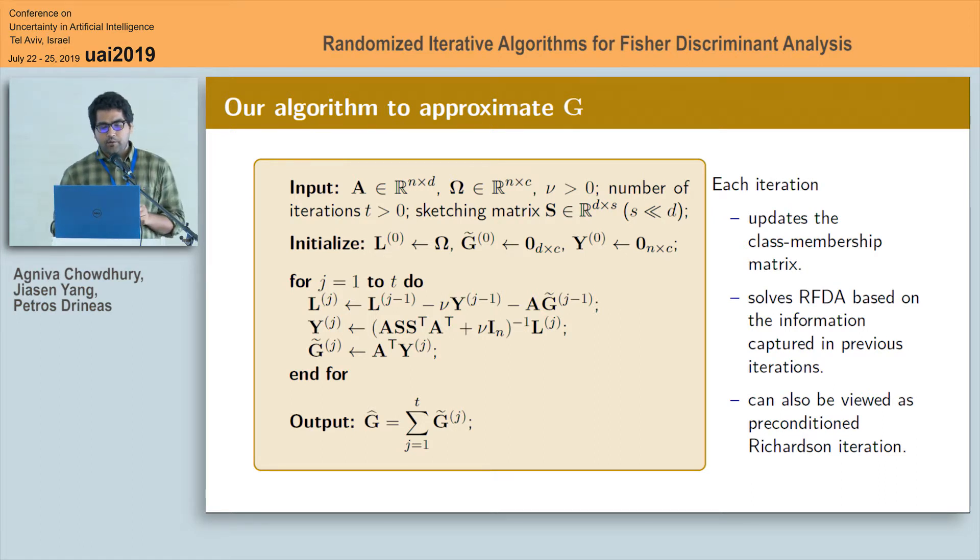Finally, we sum up all these intermediate solution matrices g tilde j's to get g hat which is a very close approximation to g. It is to be noted that our algorithm can also be viewed as a preconditioned Richardson iteration with step size equals to 1.